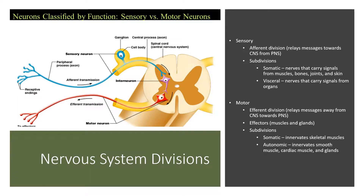The two subdivisions of the efferent division are the somatic division, which innervates skeletal muscles—so skeletal muscles are going to be the effectors—and there's also the autonomic subdivision, which innervates smooth muscle, cardiac muscle, and glands.